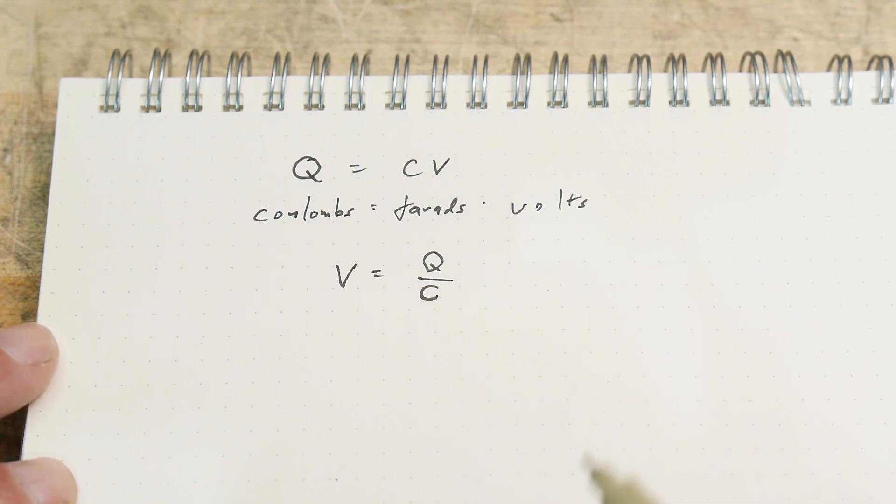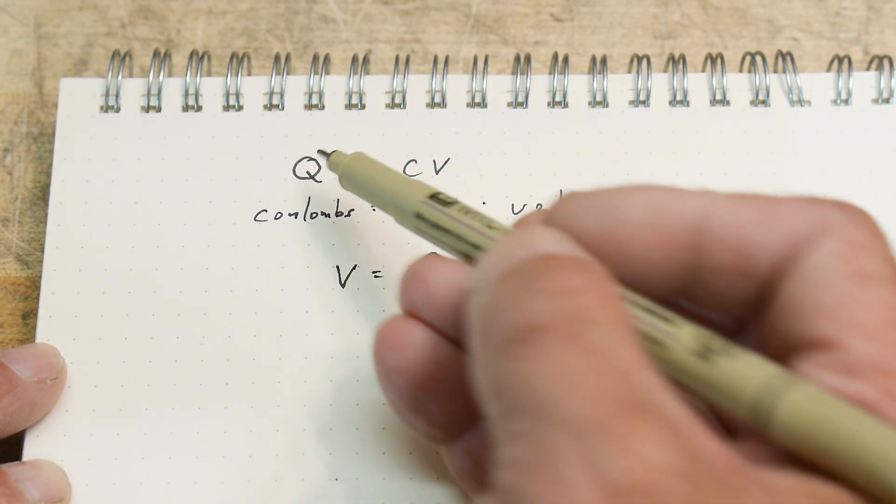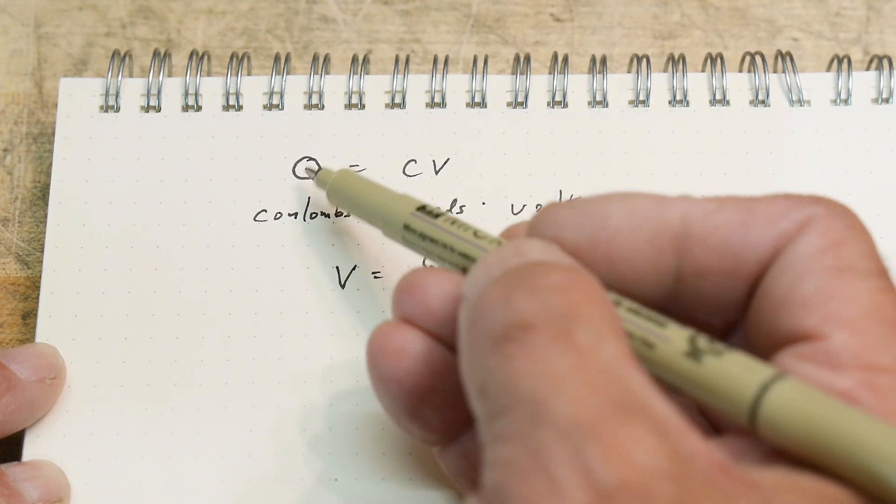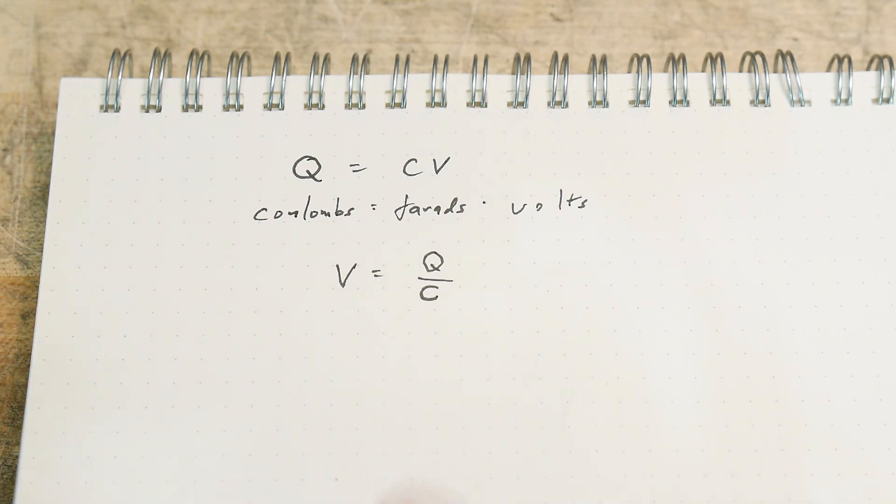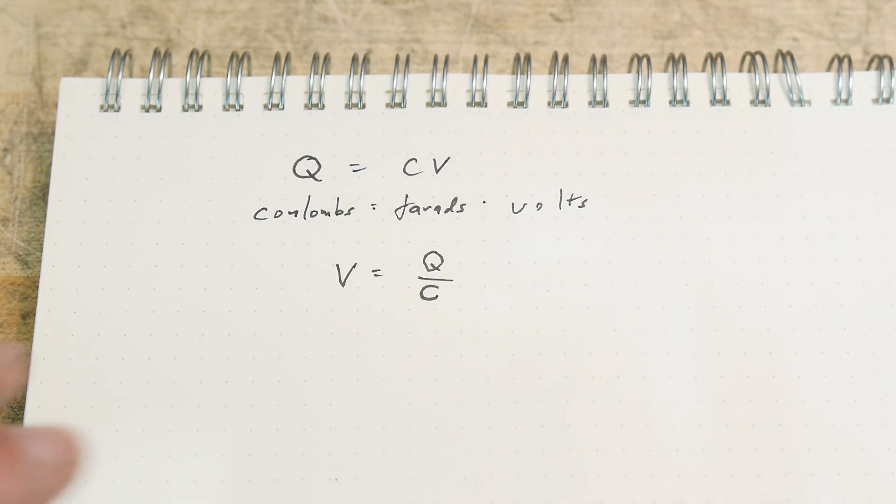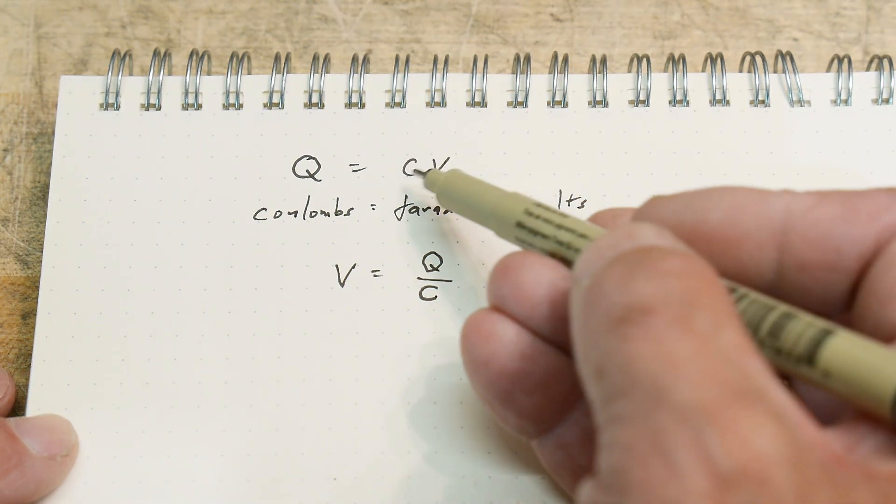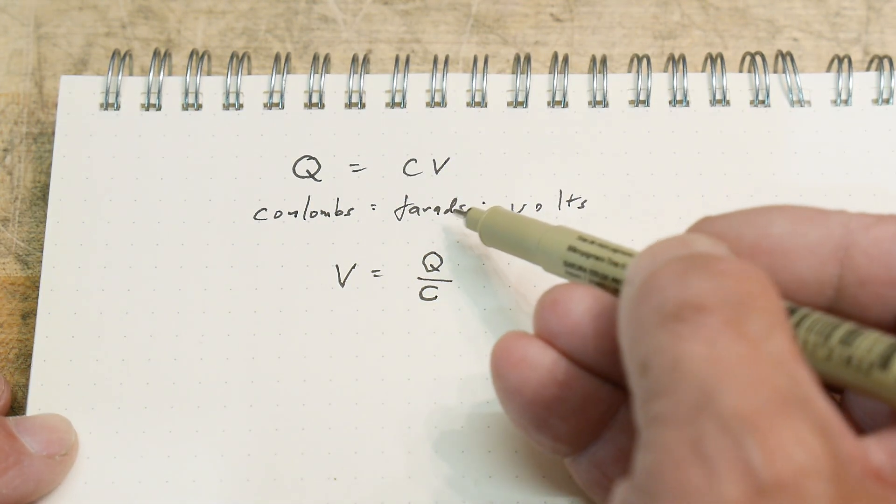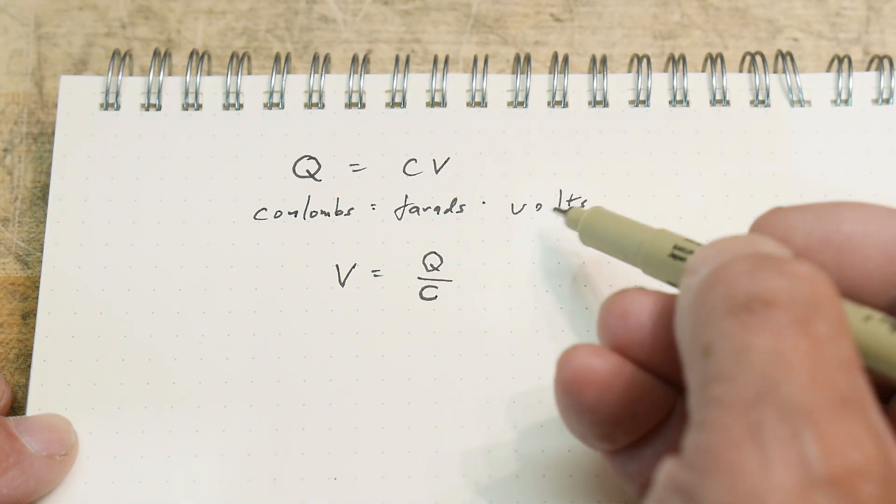We need to know an equation here: Q equals CV. So charge is in Coulombs, that's the number of electrons you've got, and that equals capacitance measured in Farads. We're all familiar with capacitors, times voltage in volts.